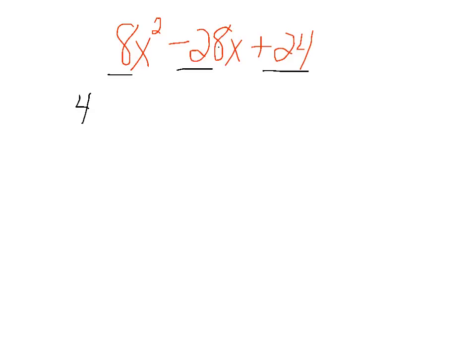4 will factor out of all of those. That's going to make the rest of my process much easier, leaving me 2x squared minus 7x plus 6.